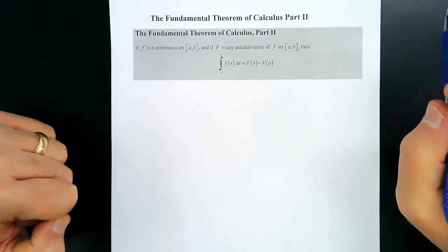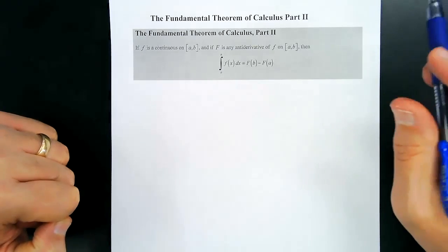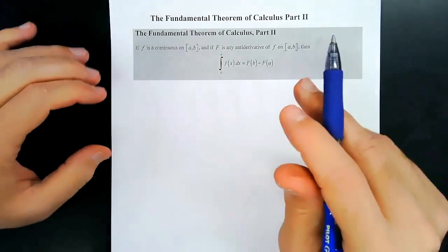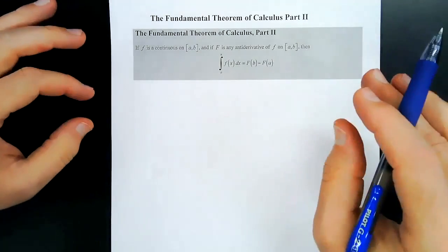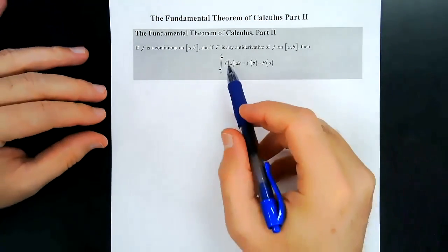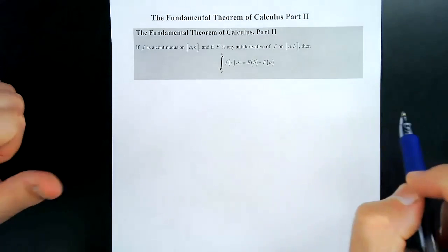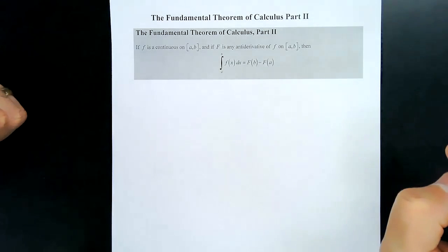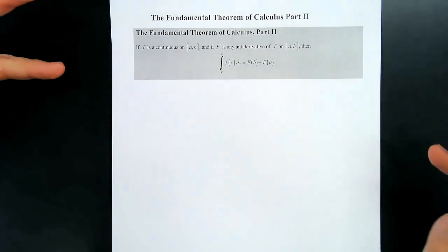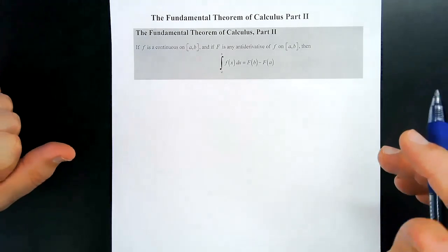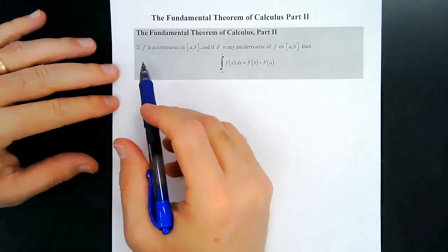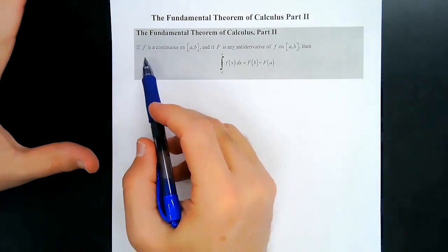Today we're going to look at the fundamental theorem of calculus, part two of it. This is really the part that allows us to find what a definite integral is without using graphs or the area or knowing the area or any of those things. This is going to come from antiderivatives. So the theorem says this: